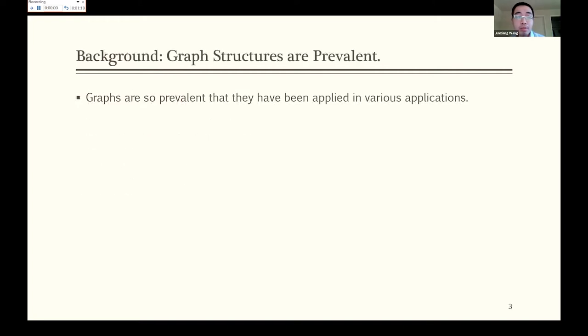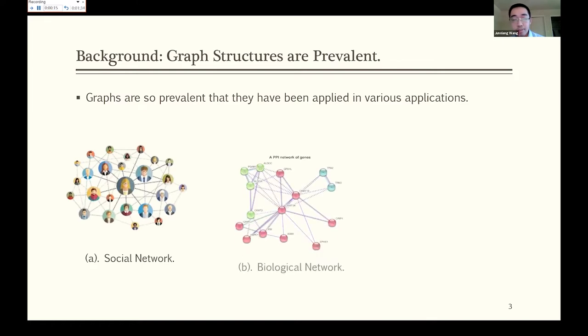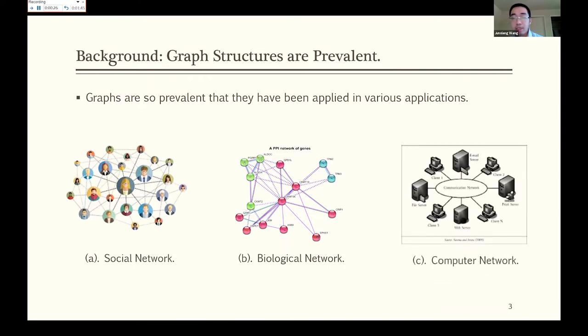As we all know, graphs are universal structures that have been applied in many applications. For example, in social networks, graph models can be utilized to predict whether two users share a connection. In the biological domain, graph models can be utilized to predict protein-protein interaction, which would be useful for drug development. And in the computer science domain, if we do malware detection, we can utilize graph for this task.